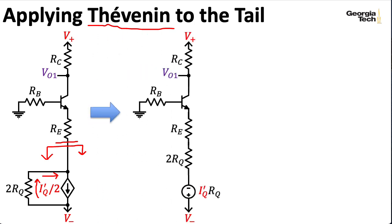So I can imagine that I have a voltage source here, where what this is modeling is I'm starting at V minus, but now I have a voltage drop of IQ prime times RQ, according to Ohm's law, by multiplying 2RQ by IQ prime divided by 2.